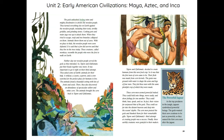The gods unleashed boiling rains and mighty floodwaters to drown the wooden people. They turned everything else on earth against the wooden people, including their tools, tortilla griddles, and grinding stones. Cooking pots and water jugs rose up to attack them. When they tried to escape, roofs and tree branches collapsed on them. Animals threw them out of caves. With no place to hide, the wooden people were soon defeated. It is said that a few did survive and that they live in the trees today — these creatures called monkeys resemble the people who were the first to walk on earth.